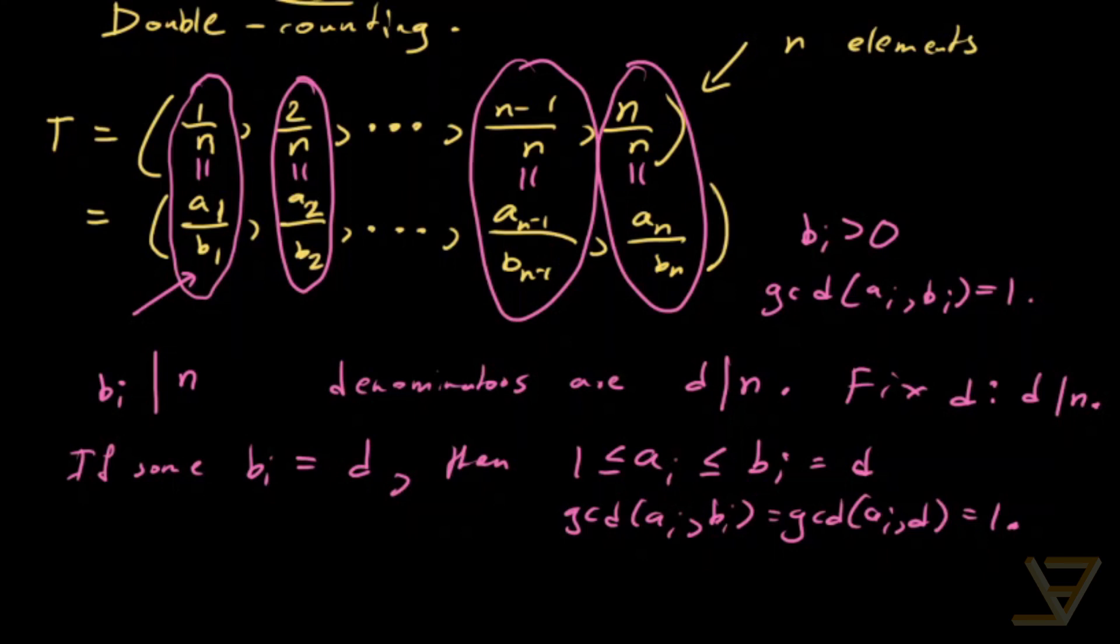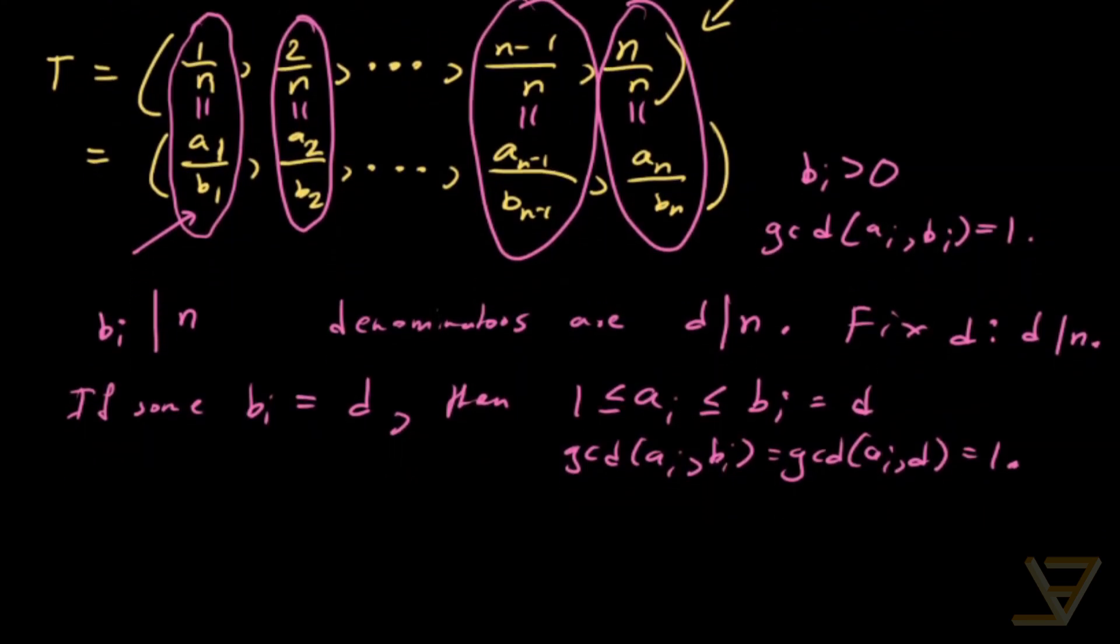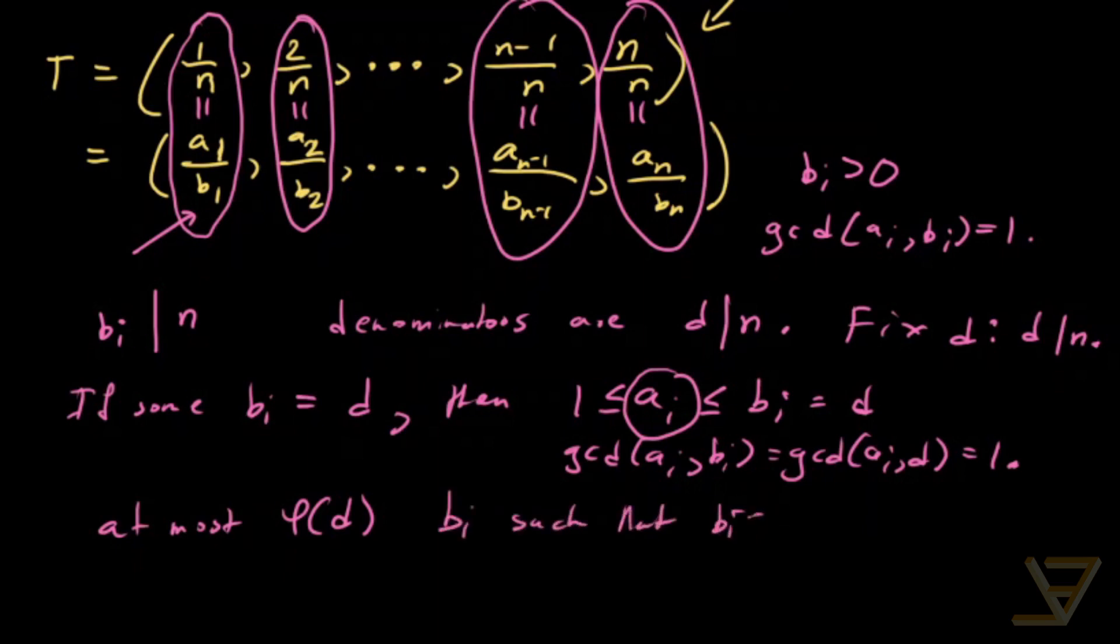So there are at most, if we consider all the possible ai, there are at most phi of d by definition of phi, phi of d bi such that bi equals d.